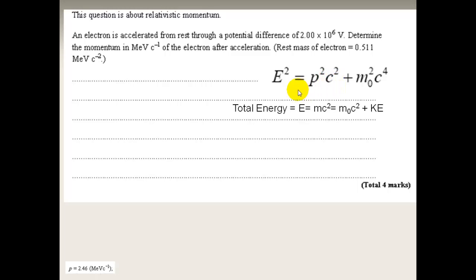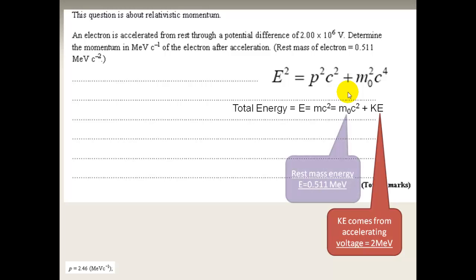Remember the total energy E equals mc squared, which in other words is m0c squared, which is the rest mass energy plus the kinetic energy. And this comes from accelerating the particle, which is going to be 2 MeV. The m0c squared comes from the rest mass energy, so the total energy to start with is going to be the sum of these two energies, 2.51 MeV.